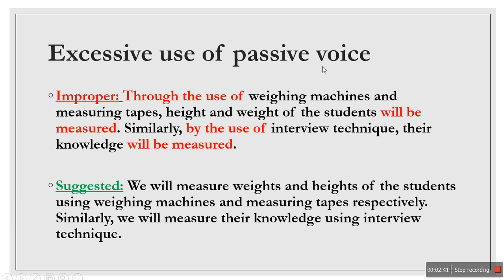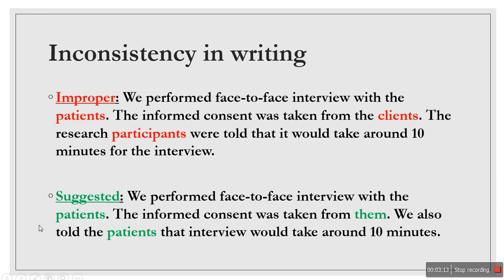Another error is excessive use of passive voice. The example of the wrong sentence is: 'Through the use of weighing machines and measuring tapes, height and weight of the students will be measured; similarly, by the use of interview technique, their knowledge will be measured.' The suggested revision is: 'We will measure weights and heights of the students using weighing machines and measuring tapes respectively; similarly, we will measure their knowledge using the interview technique.'